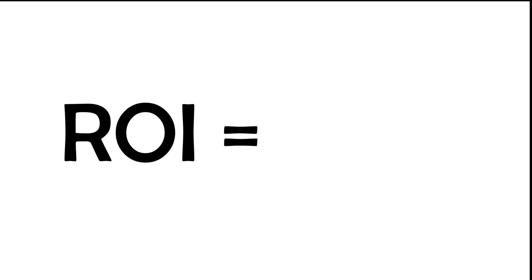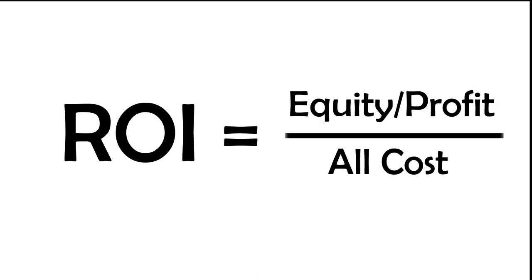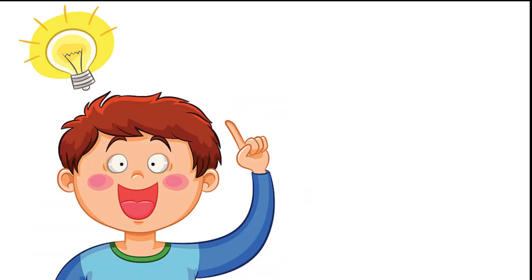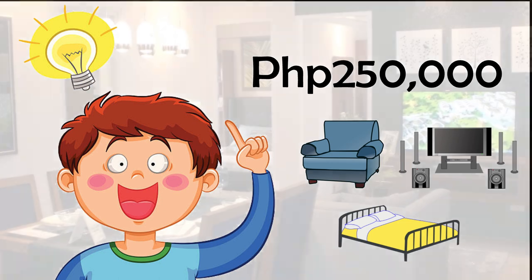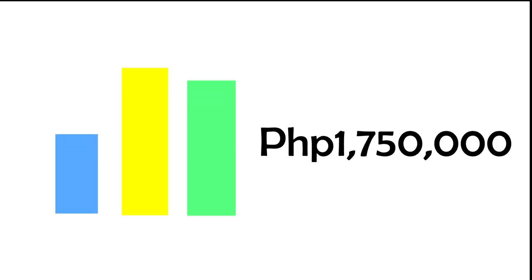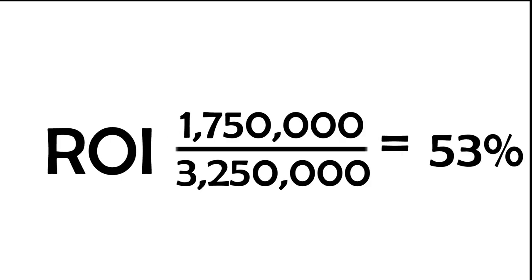The first is to calculate the ROI by dividing the equity over all the costs. An investor bought a studio unit condominium in a high-end community two years ago for around 3 million pesos. After two years, the unit was turned over to the investor. In order to beautify the unit, the investor spent around 250,000 pesos on furniture to make it livable and attractive. The current value of the property is now 5 million pesos, making the investor's equity position 1 million 750,000 pesos, resulting in an ROI of 53 percent.